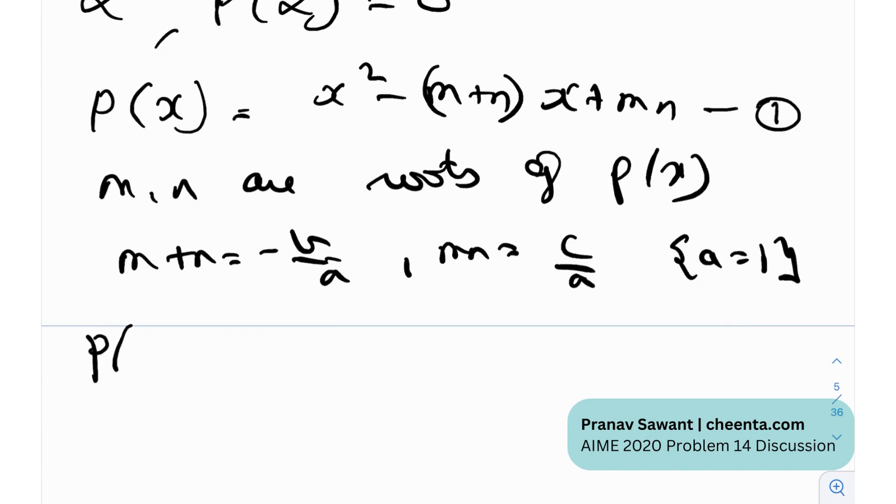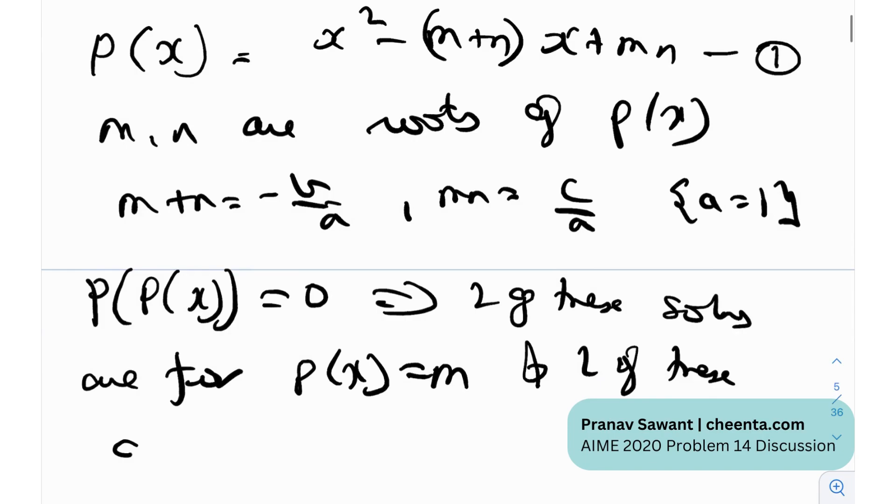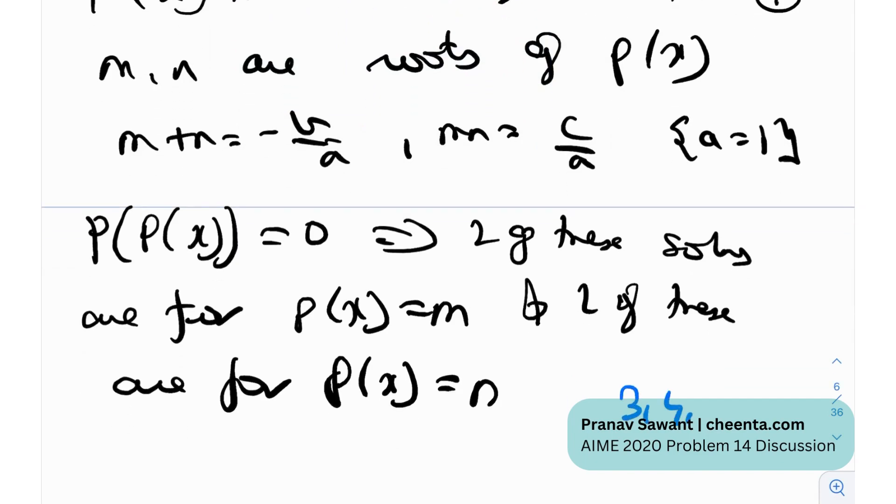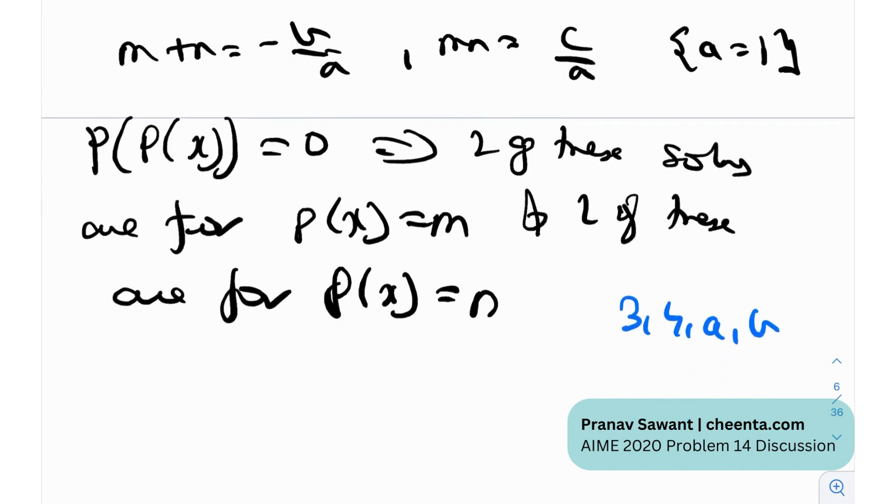Now it is given to us that p of p of x equals 0 has four solutions: 3, 4, a, and b. So that implies two of these solutions are for p of x equal to m, and two of these are for p of x equal to n. So these four solutions that we had, 3, 4, a, and b, two of these are going to be for the polynomial p of x equal to m, and two are going to be for the polynomial p of x equal to n.